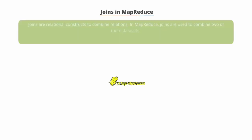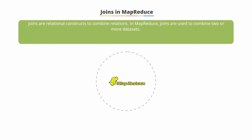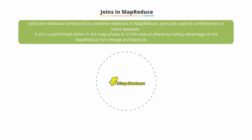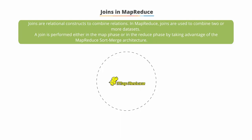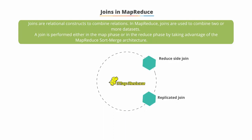Joins in MapReduce. Joins are relational constructs that can be used to combine relations. In MapReduce, joins are applicable in situations where you have two or more datasets you want to combine. A join is performed either in the Map phase or later in the Reduce phase by taking advantage of the MapReduce SortMerge architecture. The various join patterns available in MapReduce are reduced side join, replicated join, composite join, and Cartesian product.